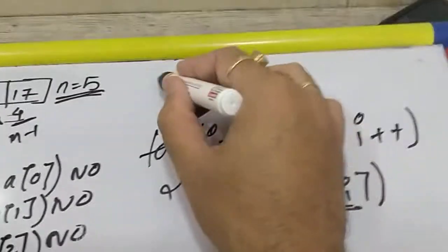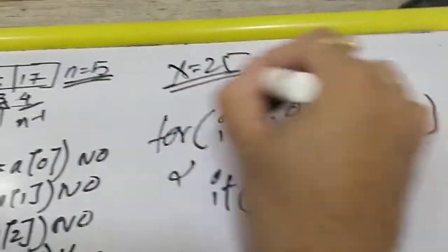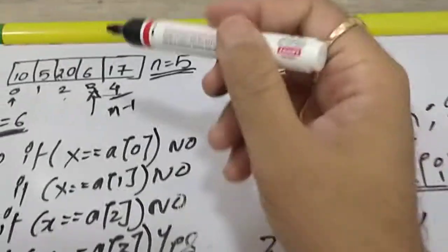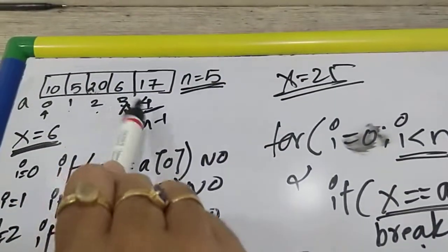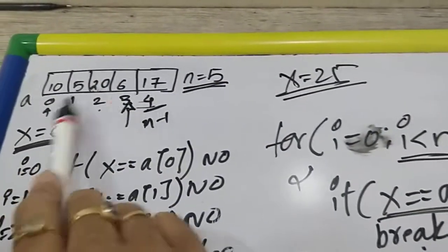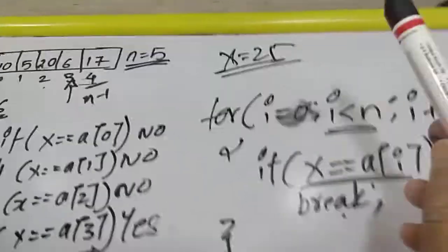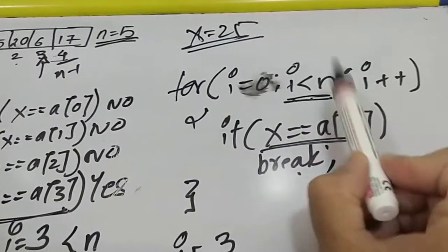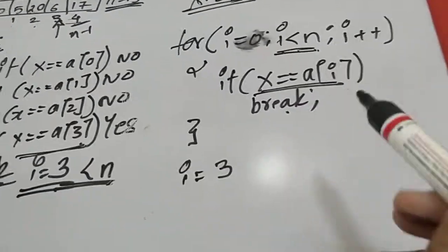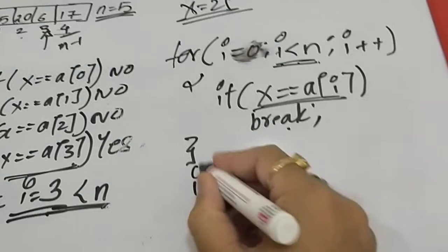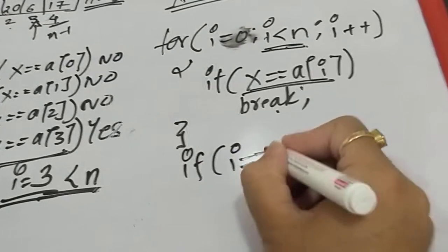Now, when I was searching for 25, we found that from position 0 to 4, x is not equal to a[i]. So i eventually becomes 5. Is 5 less than 5? No. This means that after this loop we should check the value of i. If i becomes equal to n...